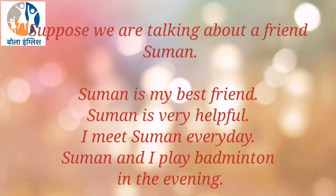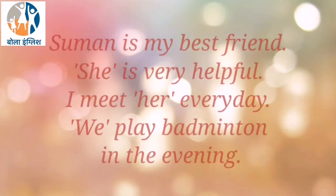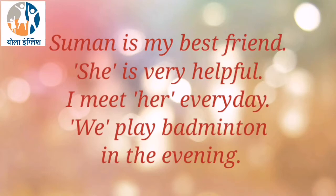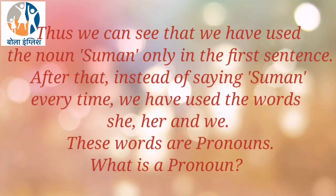Suppose we are talking about a friend, Suman. We could say: 'Suman is my best friend. Suman is very helpful. I meet Suman every day. Suman and I play badminton in the evening.' But that is not the right way. Instead, we say: 'Suman is my best friend. She is very helpful. I meet her every day. We play badminton in the evening.' Thus, we used the noun Suman only in the first sentence. After that, instead of saying Suman every time, we used the words she, her, and we.